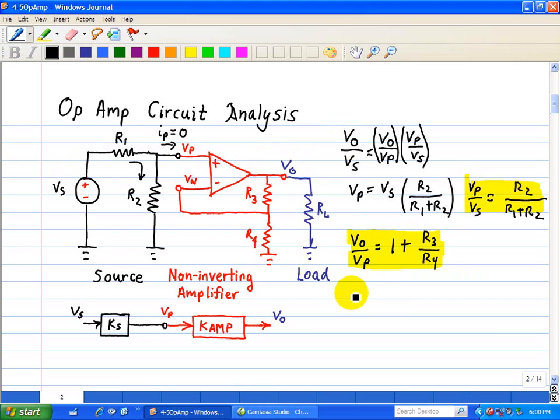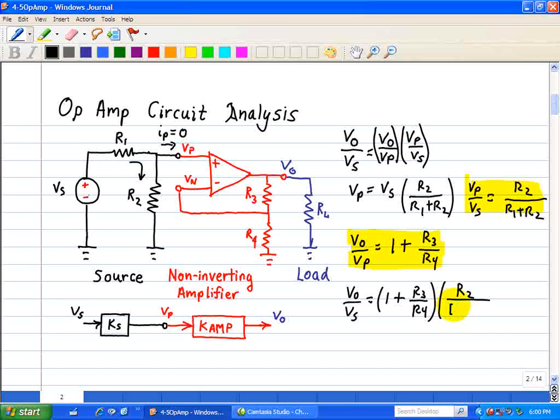Now if you take these two expressions that I just highlighted and multiply together, we get a relationship between the output voltage and the input voltage or source voltage here. In that case, we have V0 over Vs, so we have a ratio of V0 over Vp that's governed by 1 plus R3 over R4. And then we have Vp over Vs, which is governed by this relation in which we use the voltage divider, R2 over R1 plus R2.